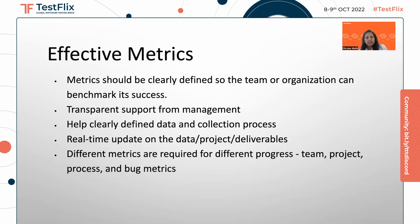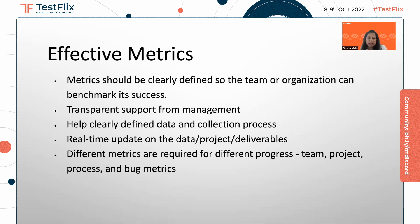So what are effective metrics and how do we know they are effective? Metrics should be clearly defined so that the team or organization can see a benchmark or baseline for success. Transparent support from management is important — for example, metrics give you backup data when seeking approval for a project, so upper management can see the transparency of your proposal backed by data. Metrics should clearly define the data and collection process, and should not be manually updated or fabricated — it should be a real-time update via a dashboard. Team, project, process, and bug metrics can all be helpful.